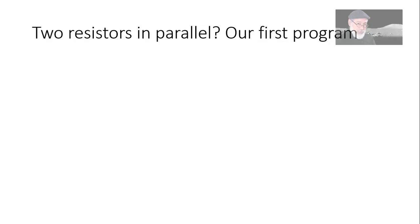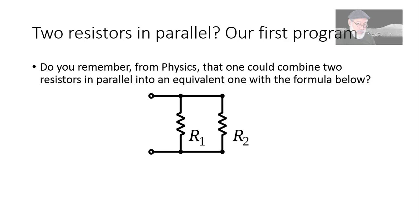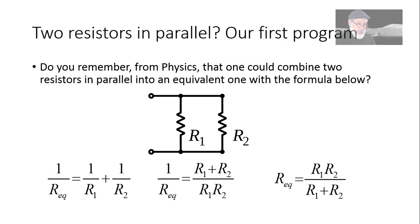Now, let's have a look at our first program on the HP Prime: two resistors in parallel. Do you remember this situation from physics? We could represent those two resistors by an equivalent value, Req, computed by the formula below. But we can manipulate the right-hand side and write it this way. If we invert both sides, we find that the equivalent value is just multiply them both, divide by the sum. Let's teach the calculator to do that for us.